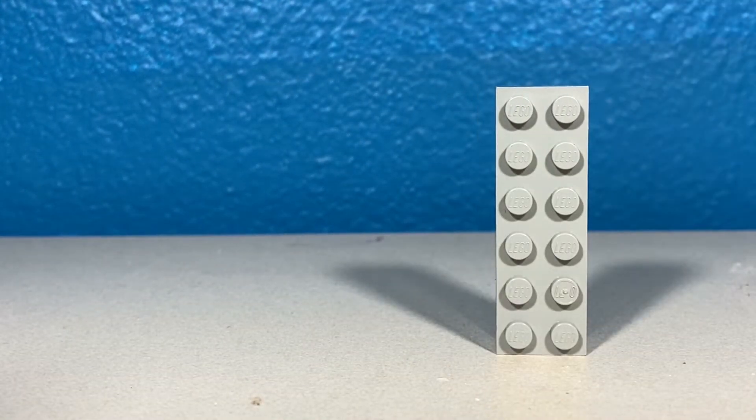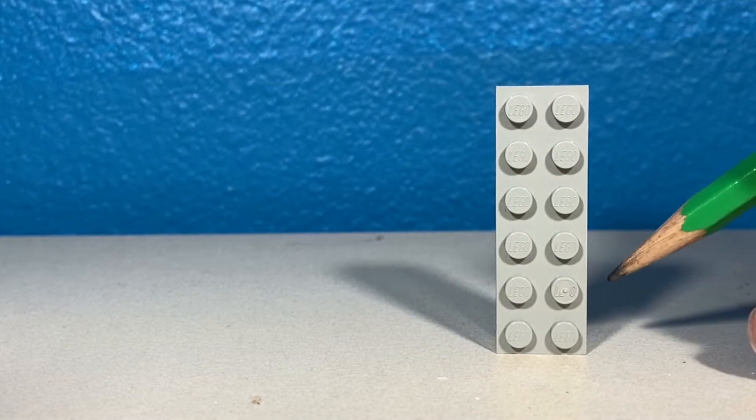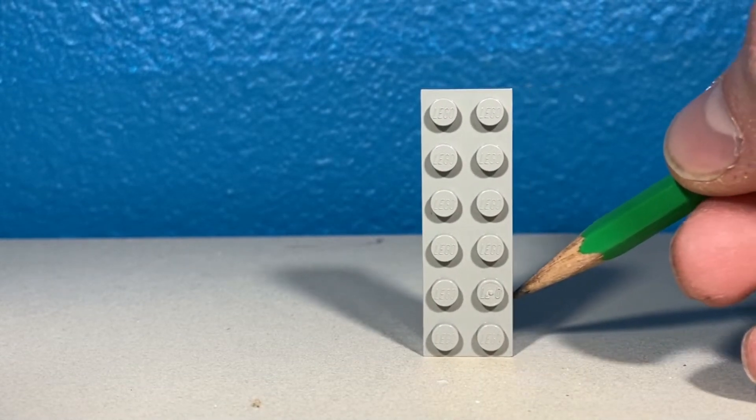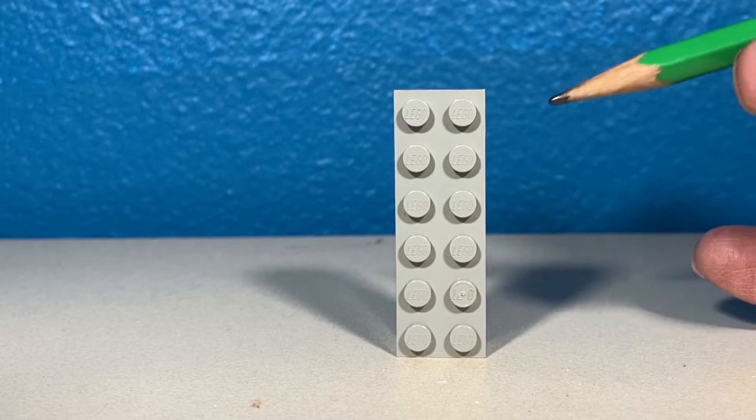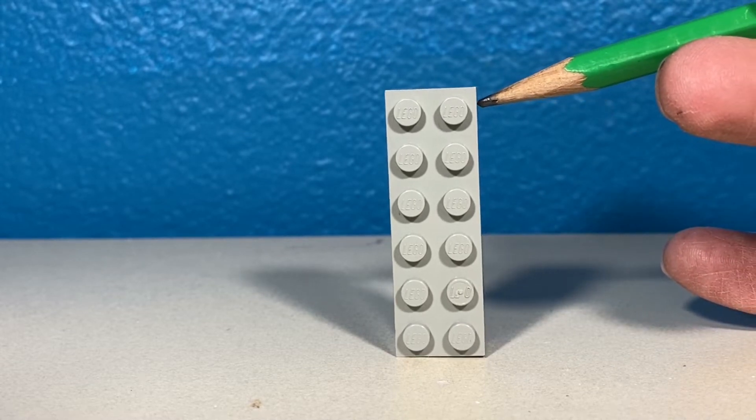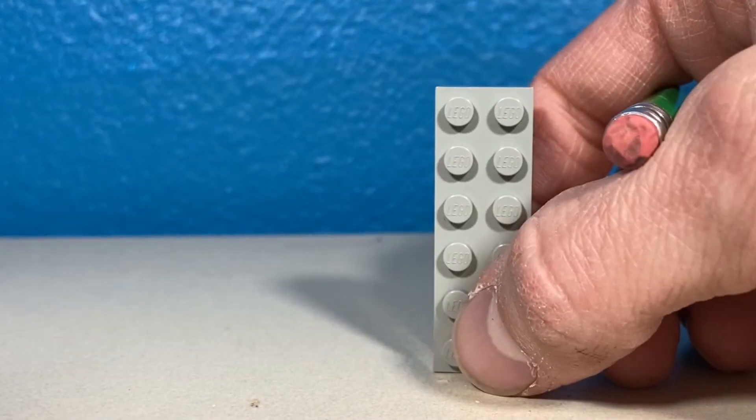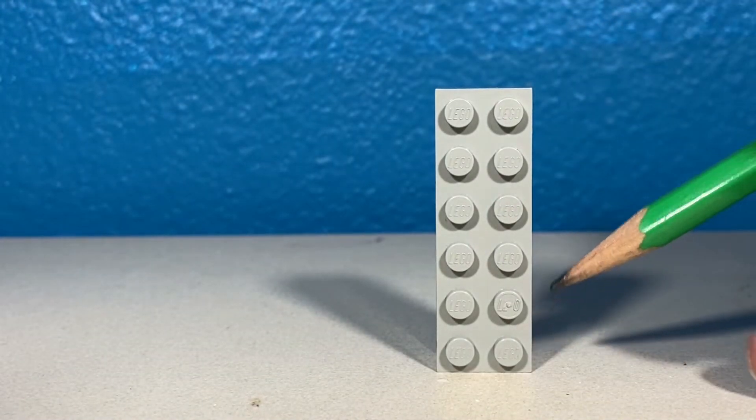All right YouTube, today we're taking a look at a pretty standard statics problem. We've got a block on a surface. If we push on this block down low, the block slides. But if we push up high on the block horizontally, the block tips over. In this problem we're gonna solve for that critical point or that transition where the block transitions from sliding to tipping.